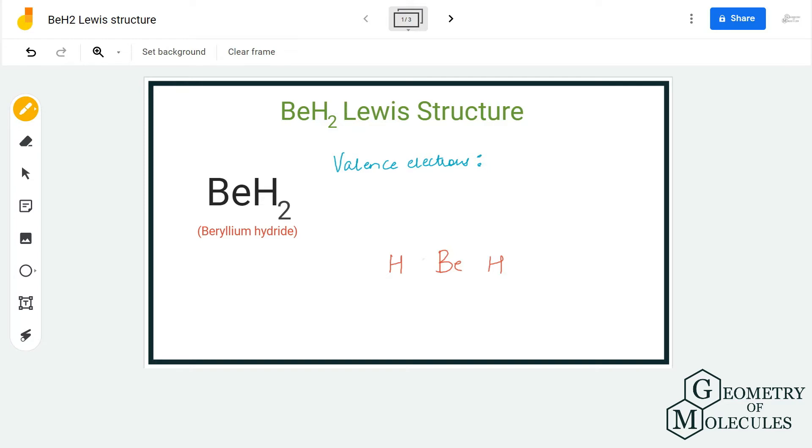Beryllium has two valence electrons in its outer shell and hydrogen atom has one valence electron in its outer shell. So in total we have four valence electrons for this molecule.